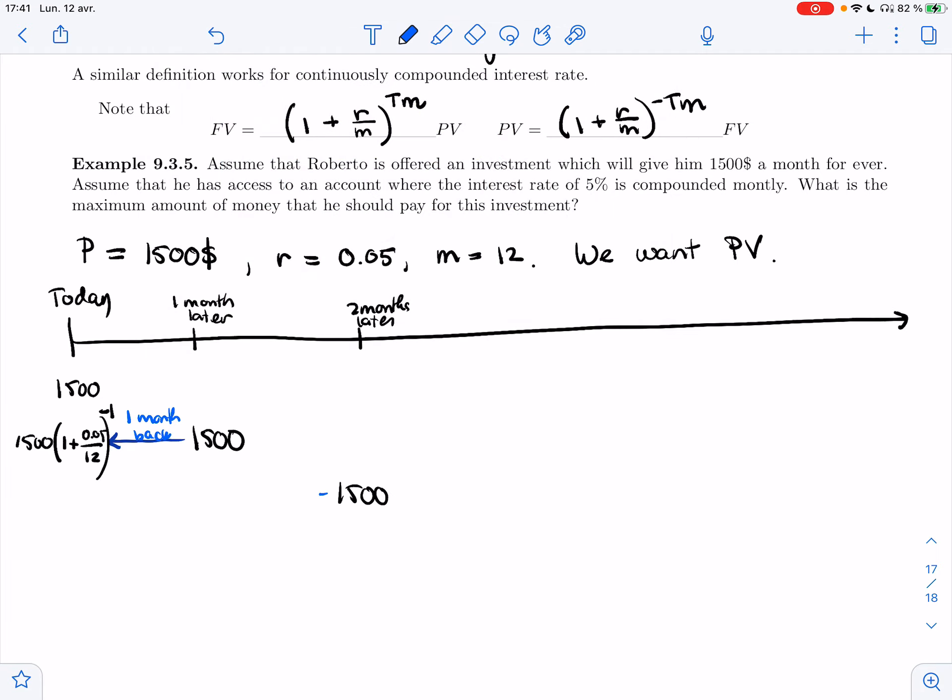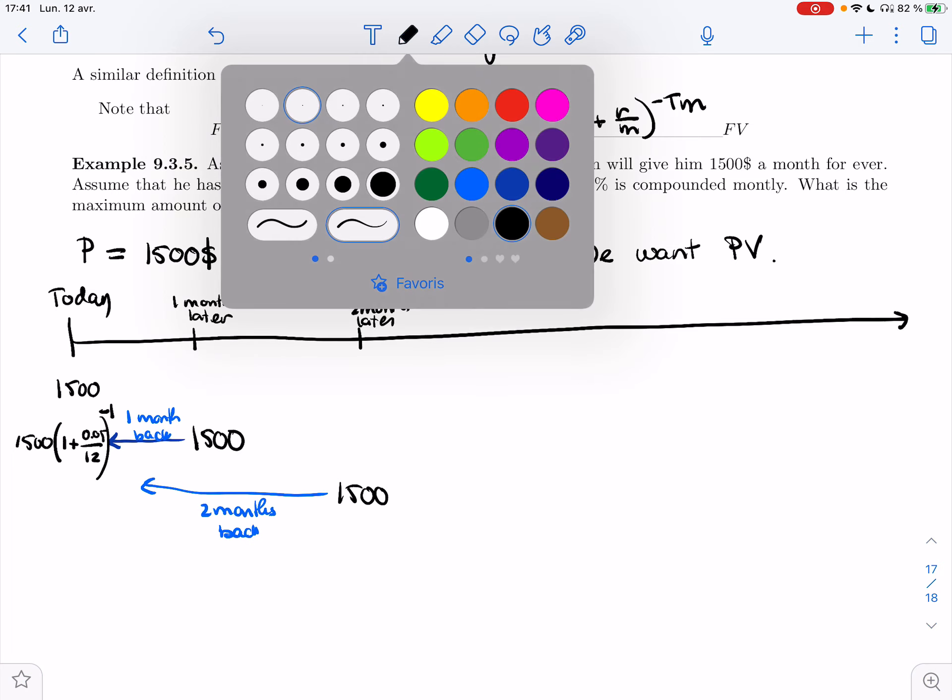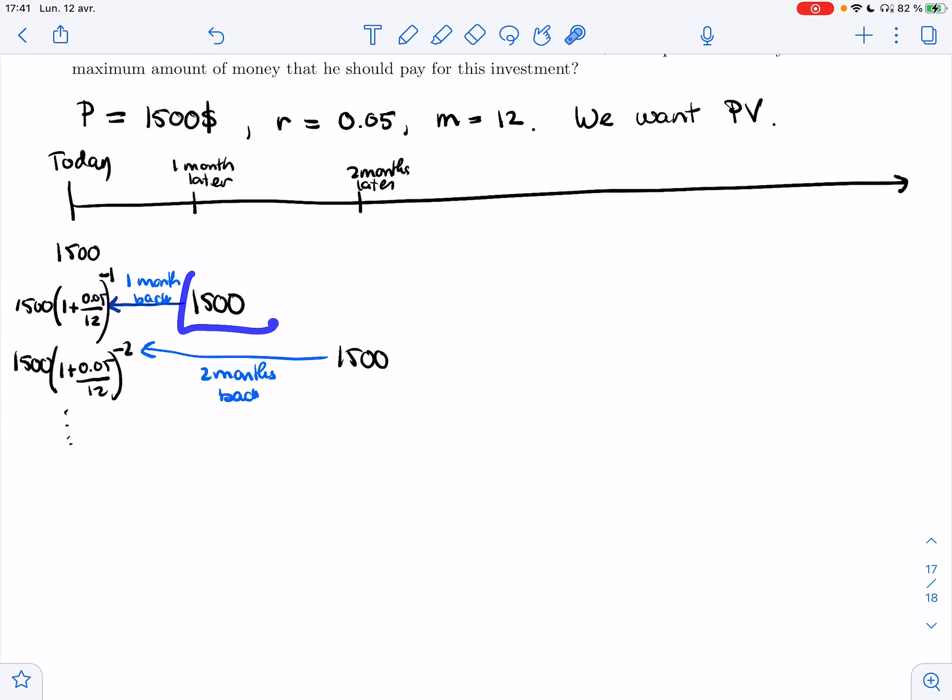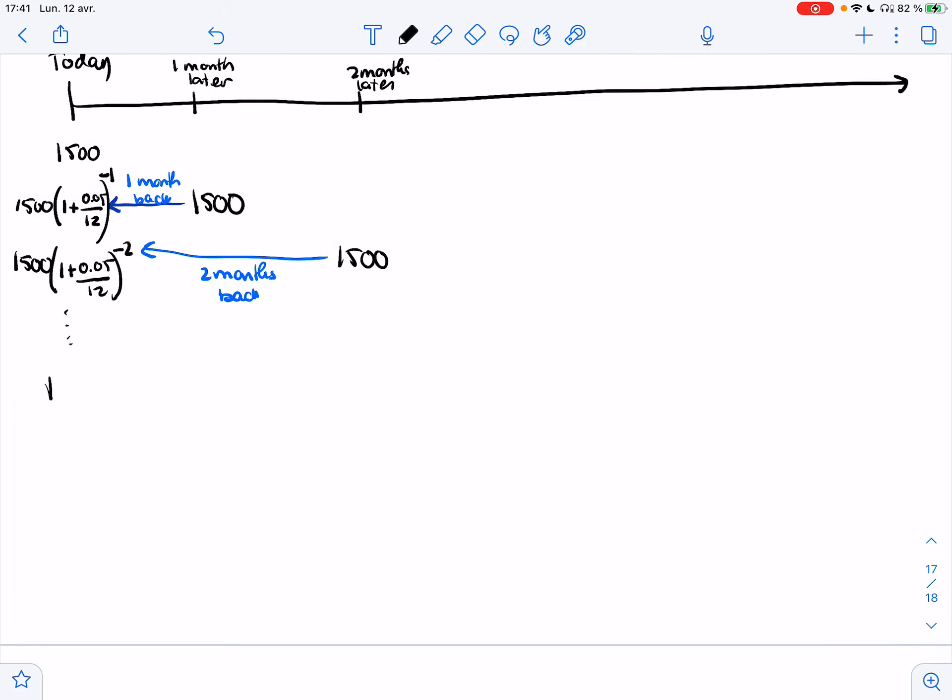I need to bring it back in time two months. And so that one is worth even less. And so on and so forth. Every amount, every payment will be worth less than the one before because we need to bring it back one month further.